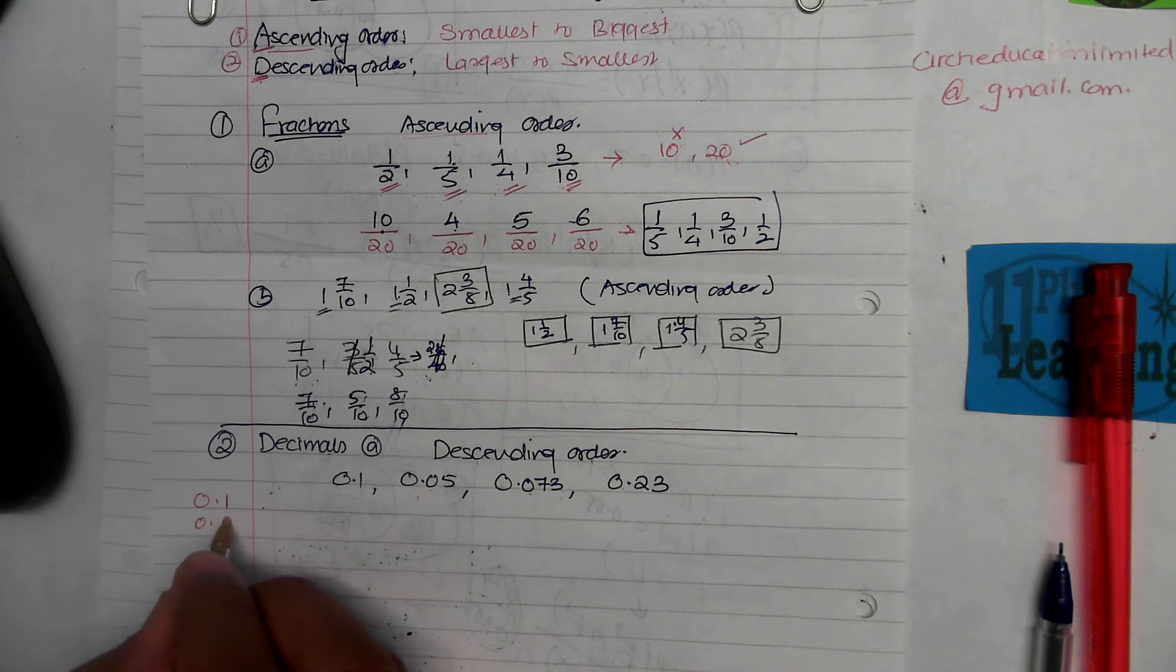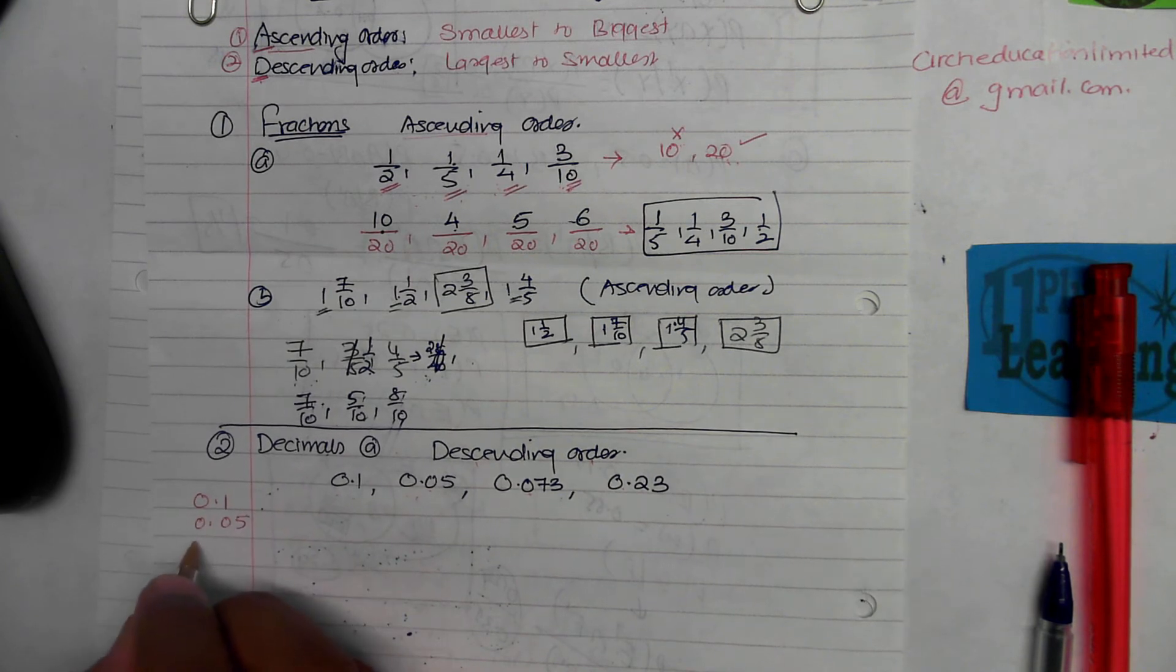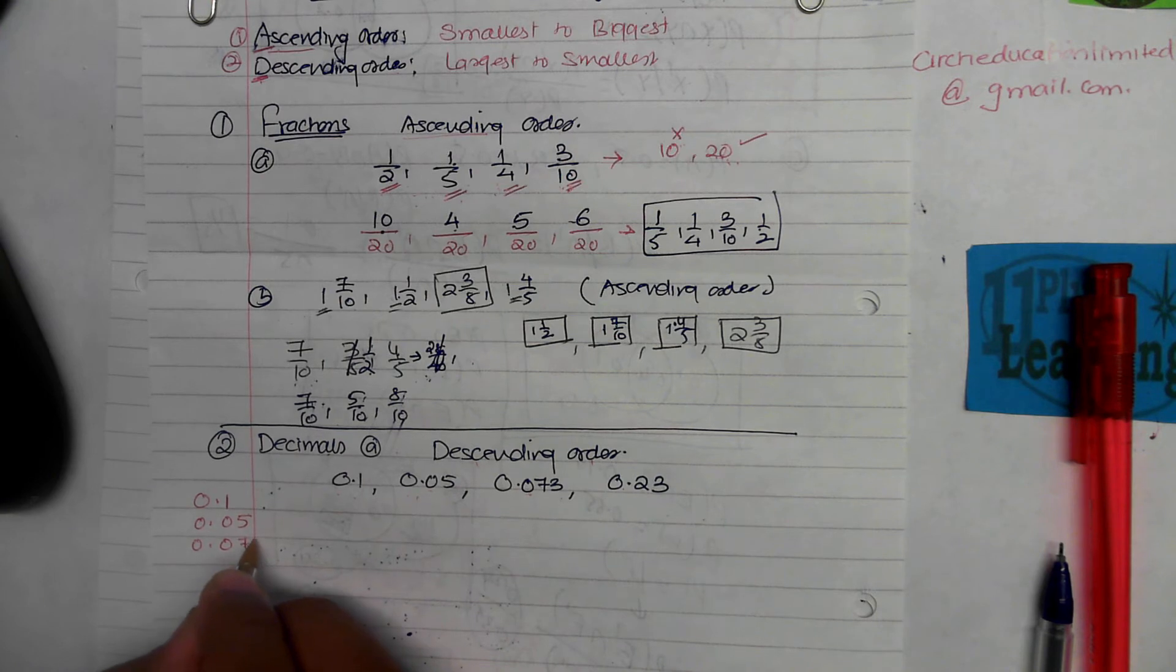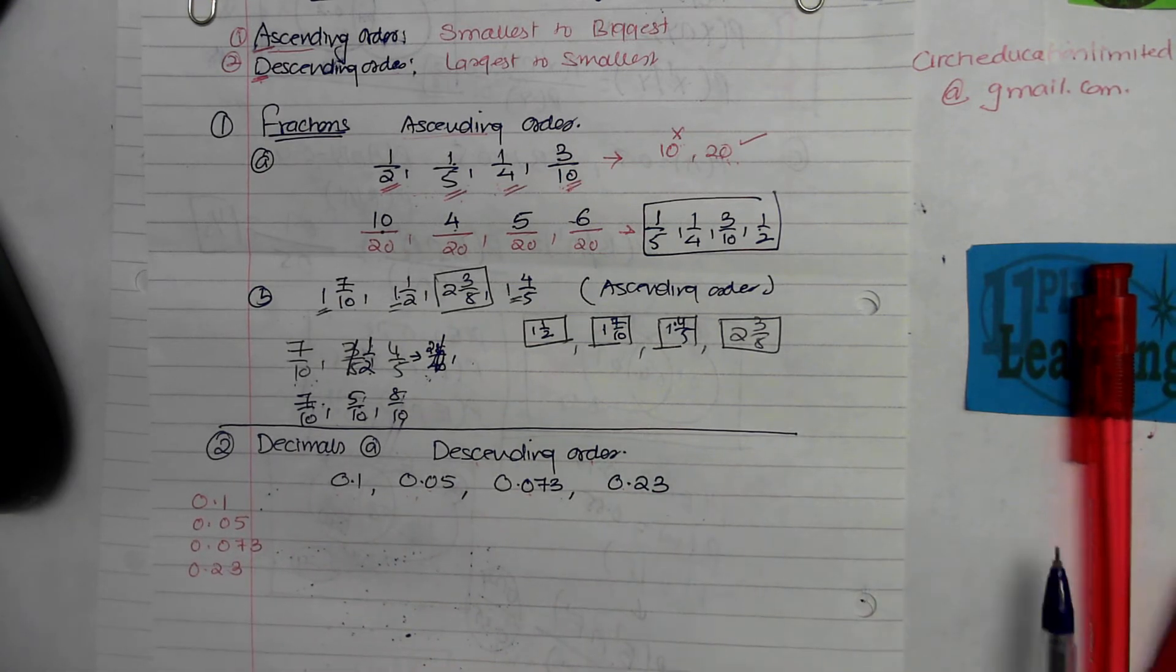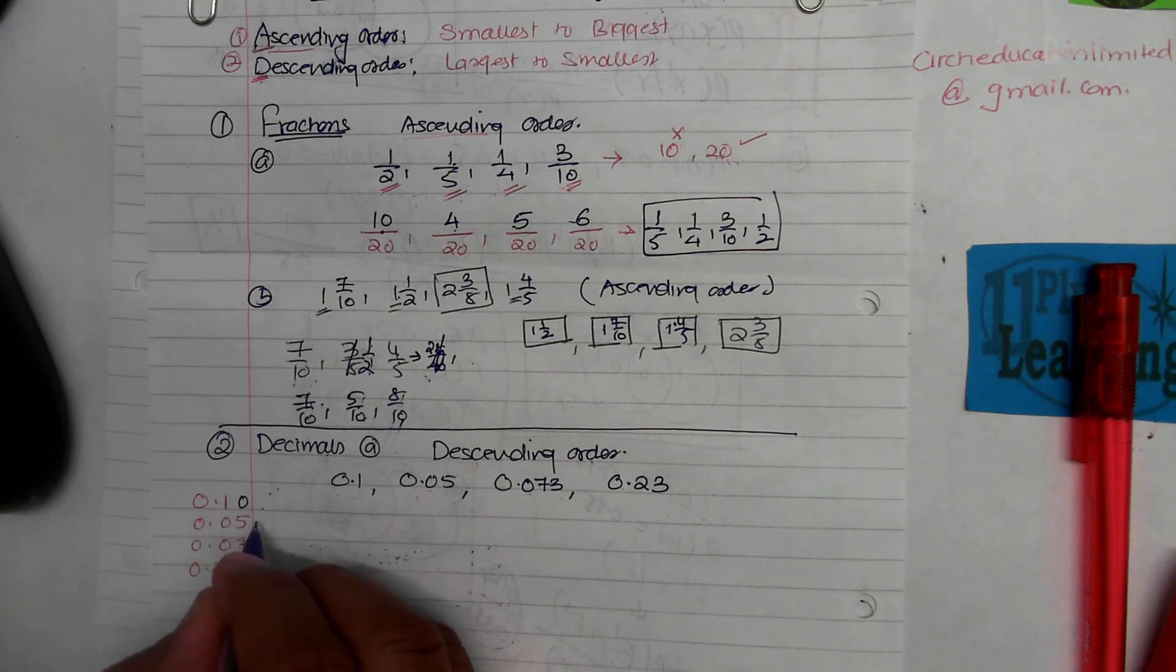If you have time, you can write all these decimals above and below each other with decimal under the decimal, keeping the place value very carefully. Then what you do is fill up the vacant spaces with zeros.